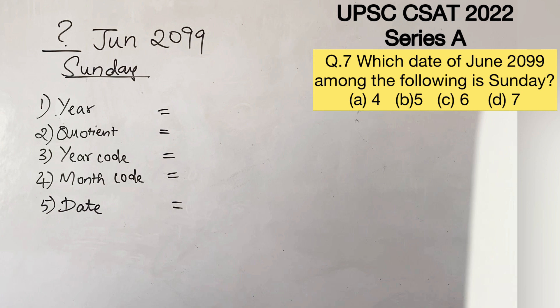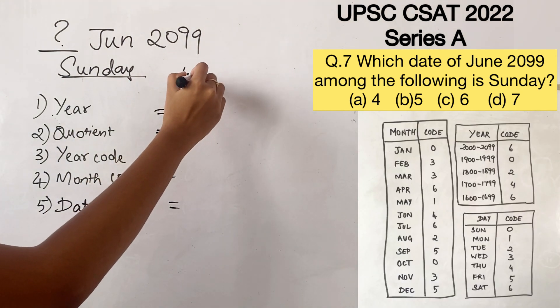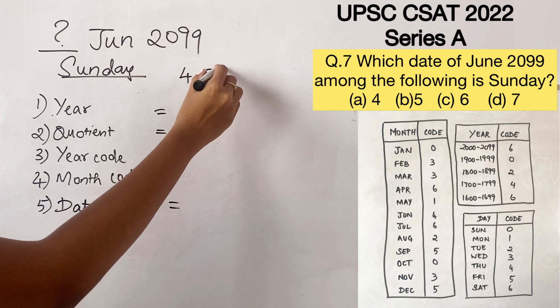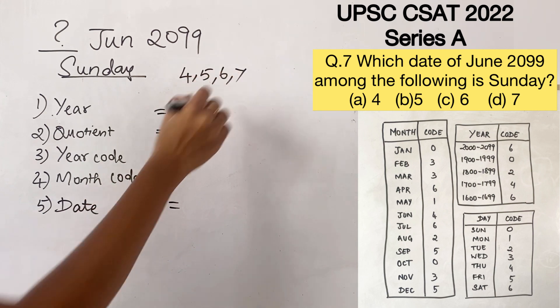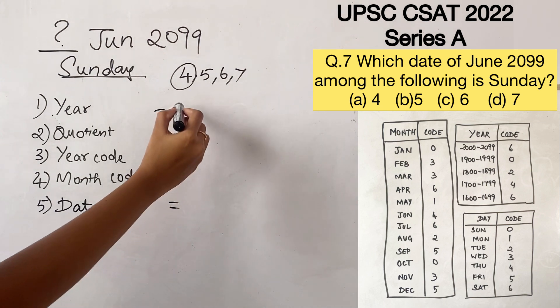This method has 5 different steps and we are going to follow those 5 steps. The given options are dates 4, 5, 6, and 7. Since no specific date is given in the question, let's consider 4. If we find out what day the 4th is, we can easily track which day is a Sunday.